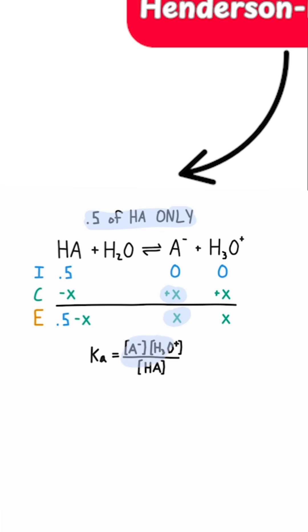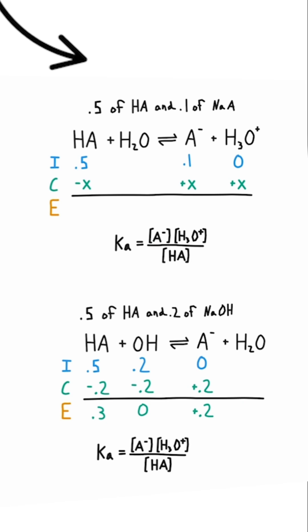You plug in the values at equilibrium into Ka to find your H3O+ concentration. For the Henderson-Hasselbalch, there are two different situations where it's applicable.